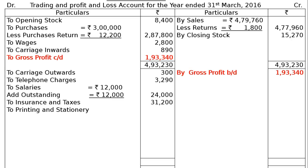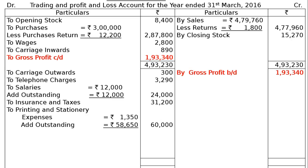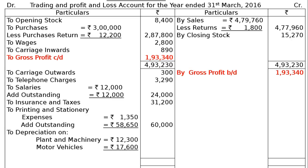Printing and stationery expenses: rupees 1,350 plus outstanding printing and stationery expenses due rupees 58,650, giving a final column total of rupees 60,000. Depreciation on plant and machinery: 10 percent of plant and machinery value is rupees 12,300. Motor vehicles are also a fixed asset and 10 percent of that is rupees 17,600.